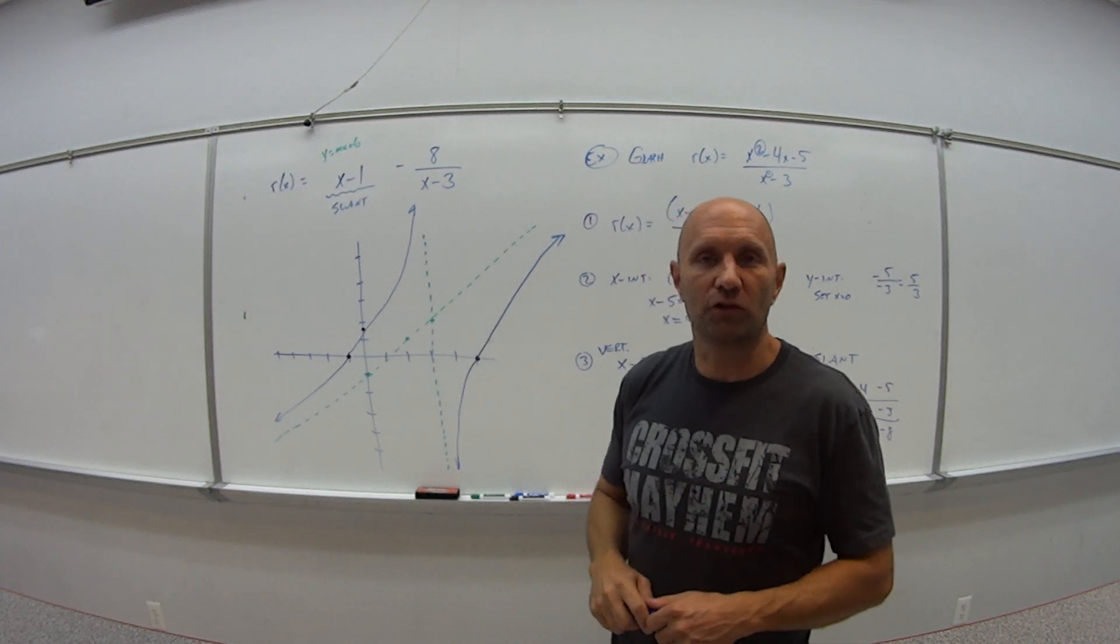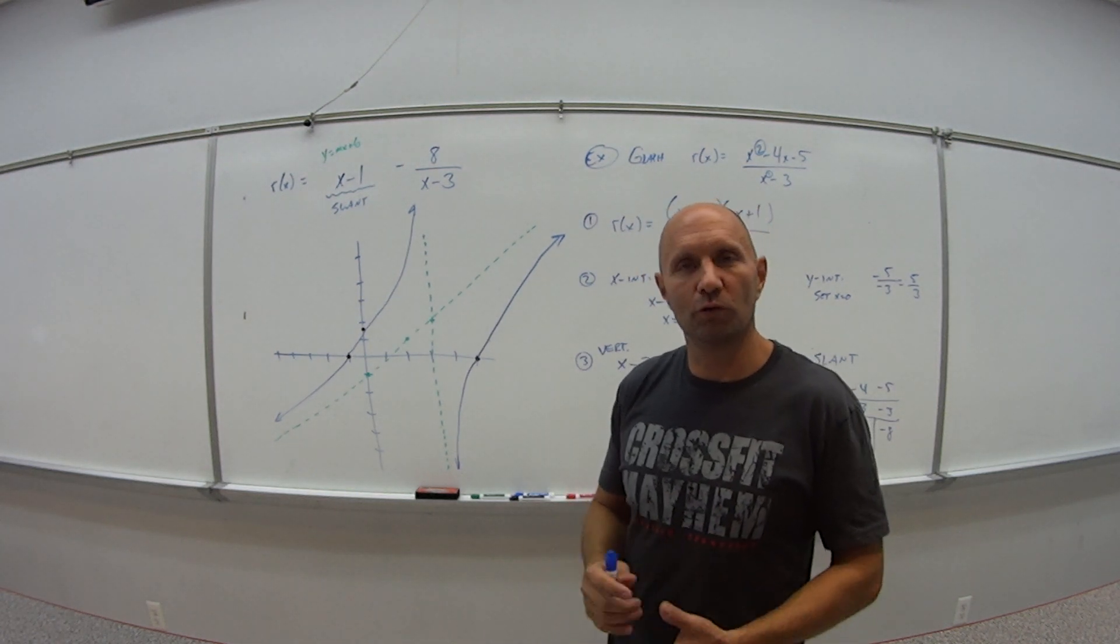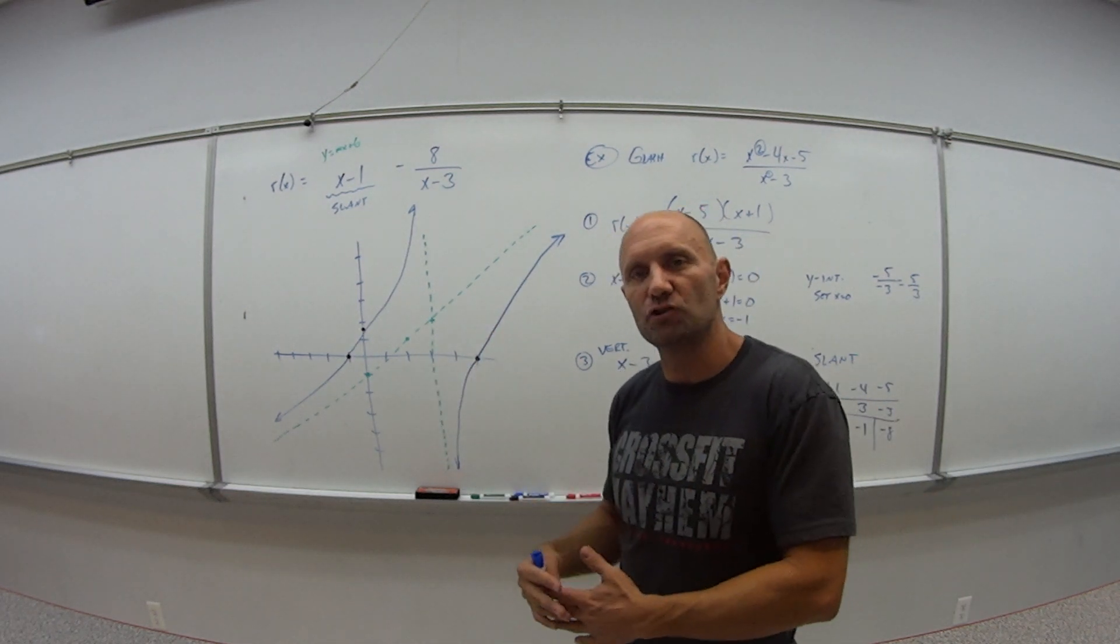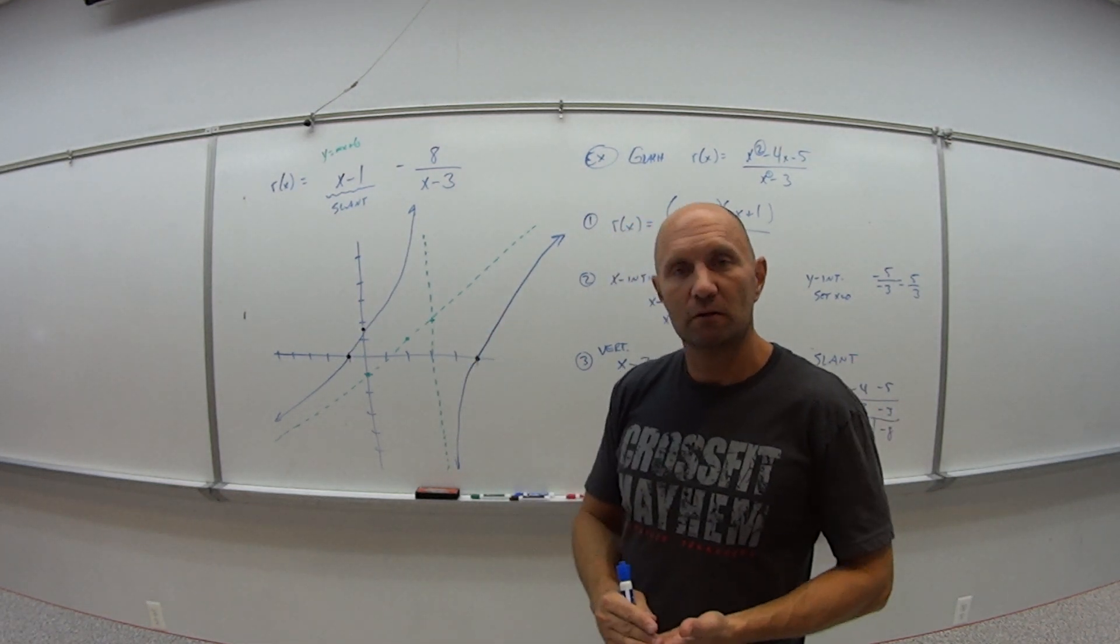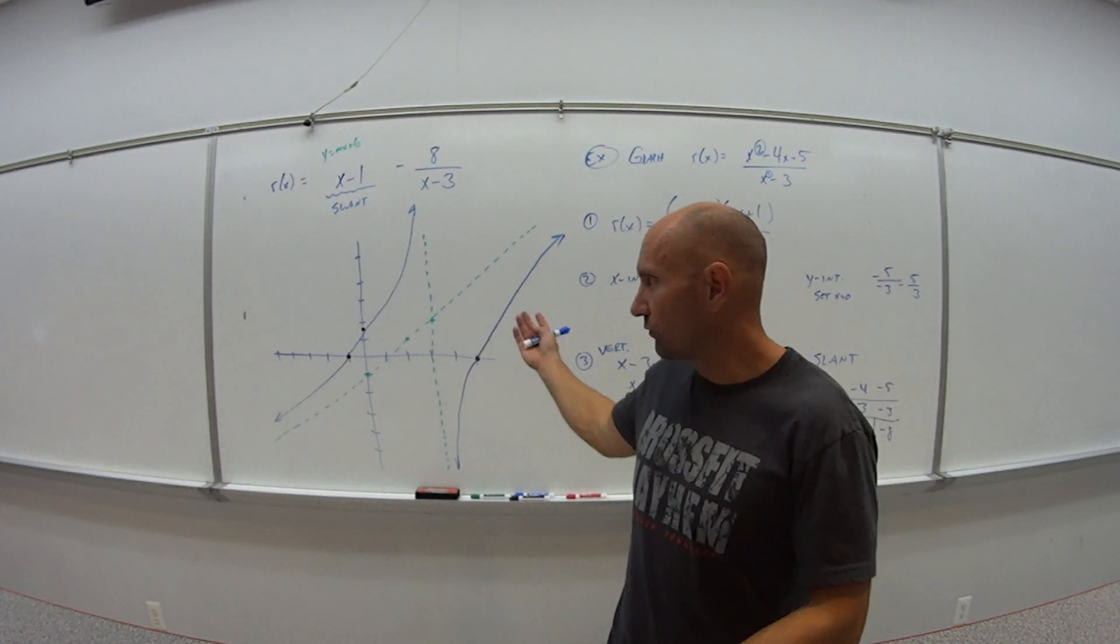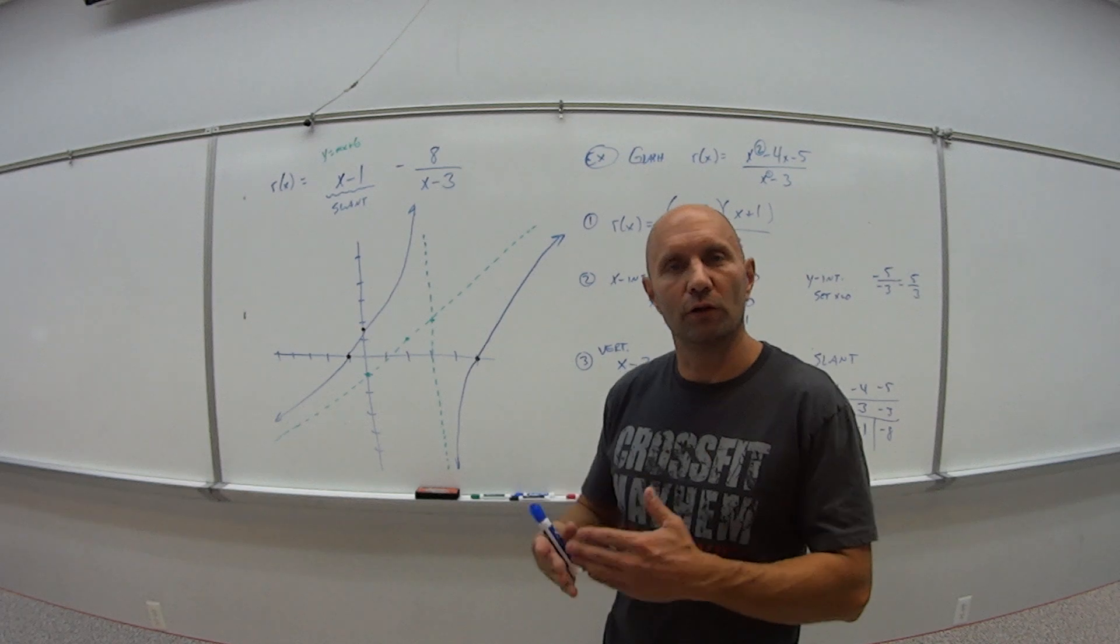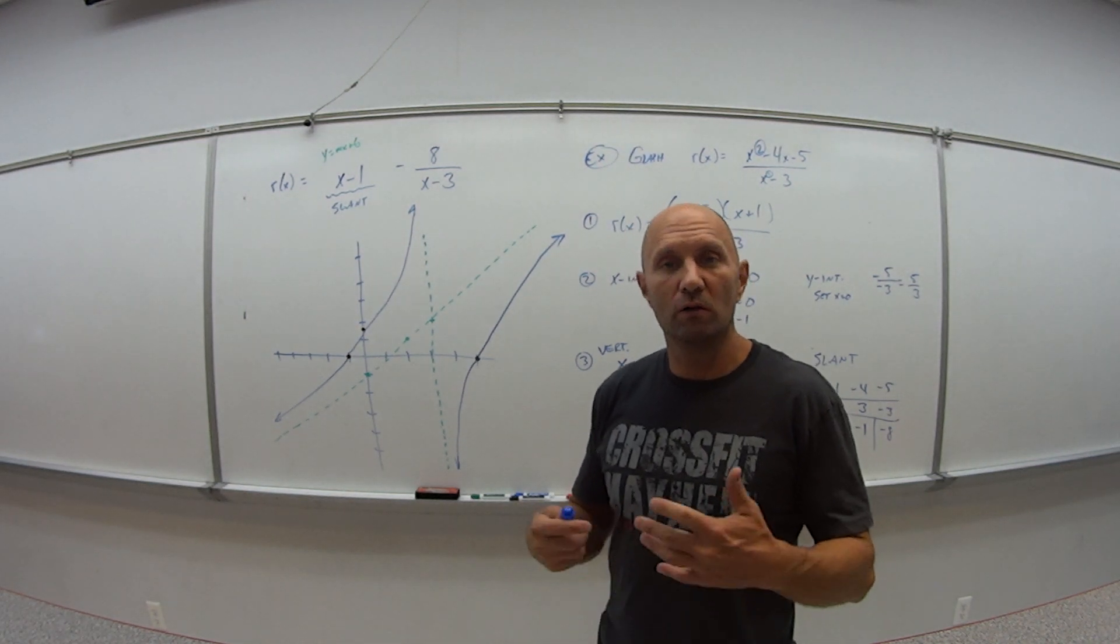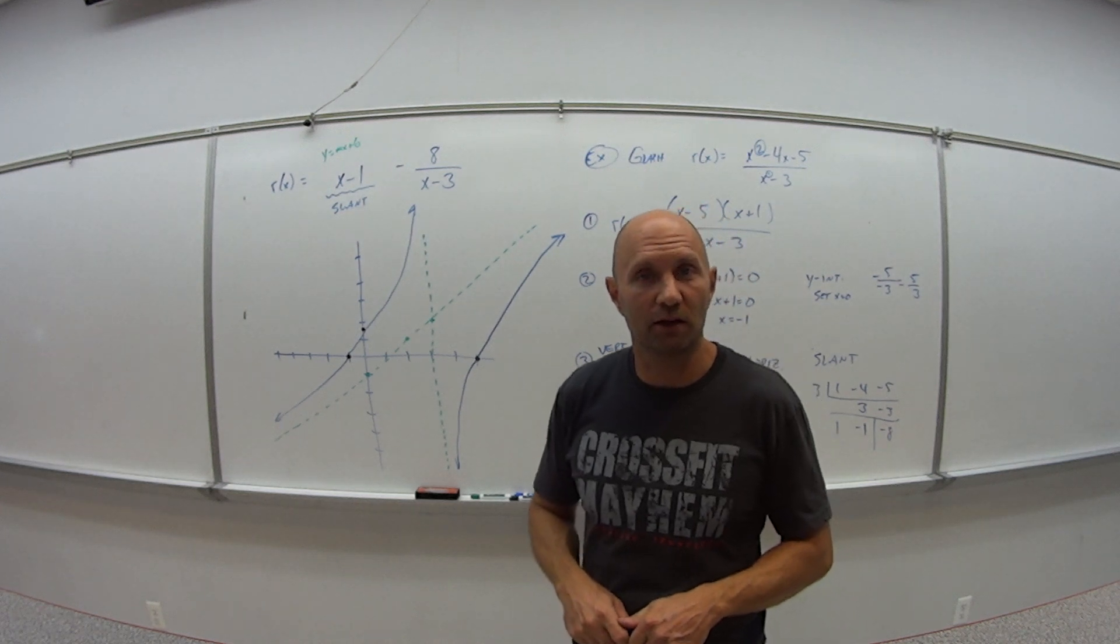And that wraps up section 3.7. So as I told you in video one, a lot of material. But it all kind of builds on each other. So that at the end, we can either graph a rational function that has vertical and horizontal. Or as we just saw here, vertical and a slant asymptote. So that wraps up chapter 3 as well. Come on back and we'll start tackling chapter 4.